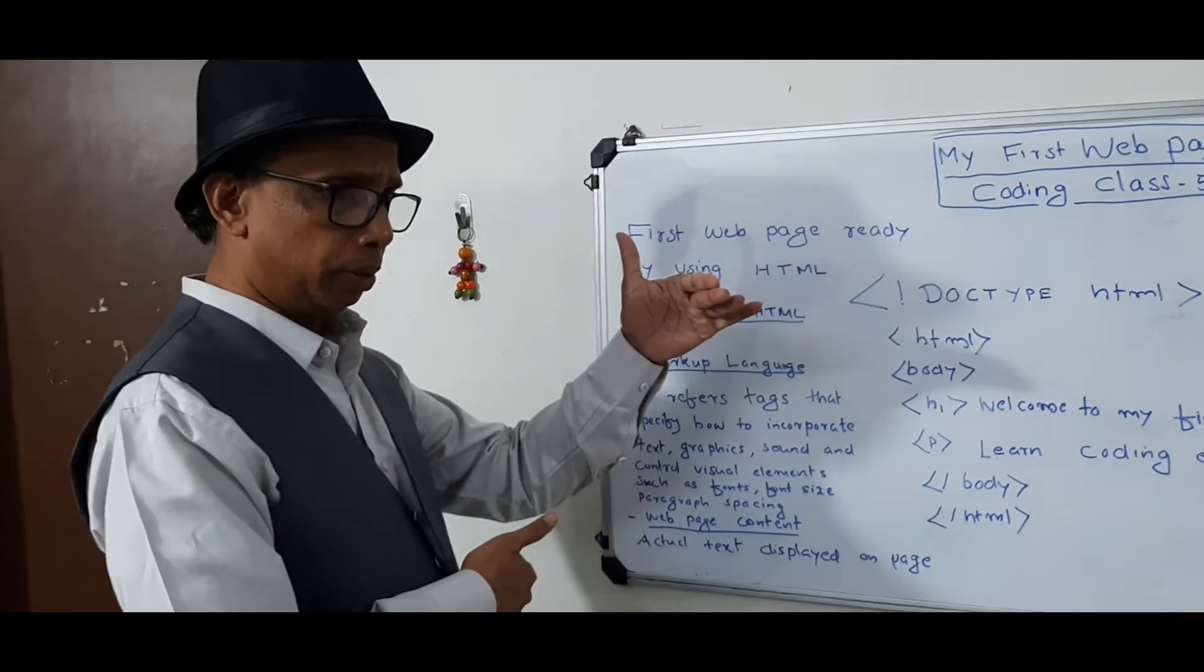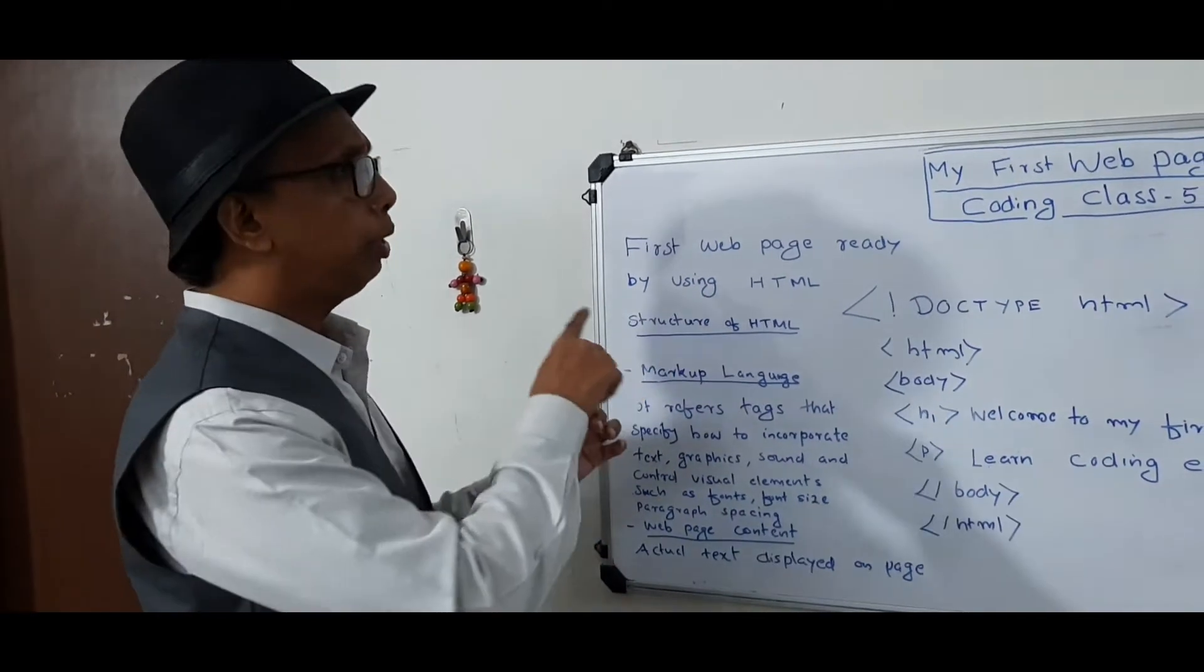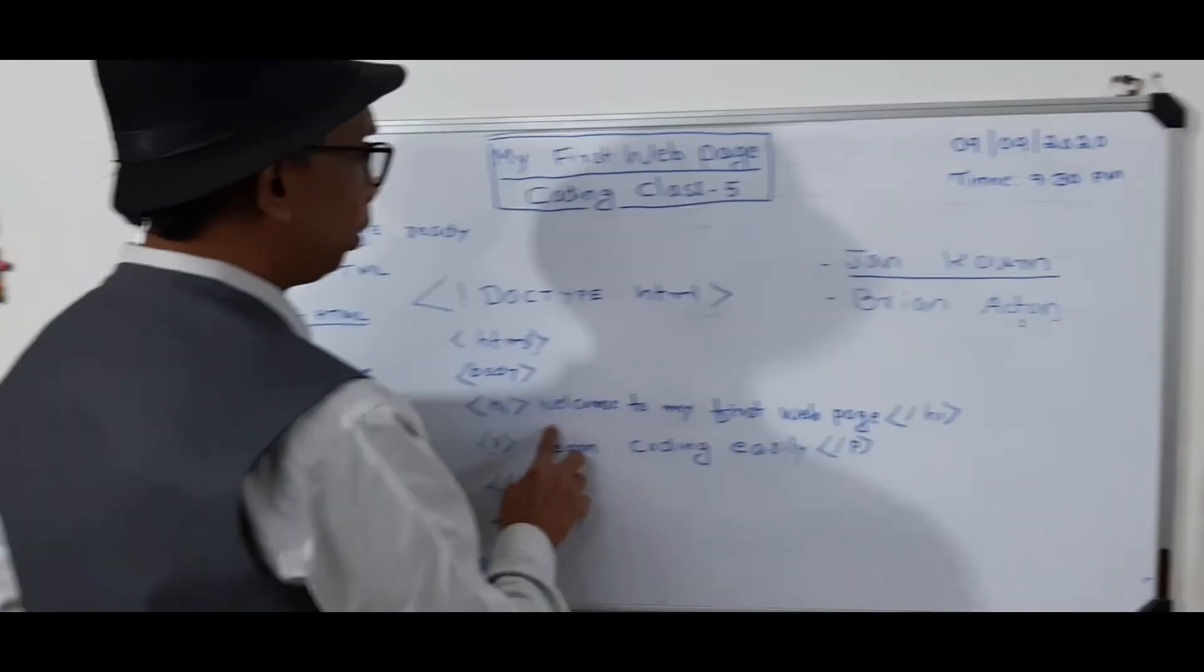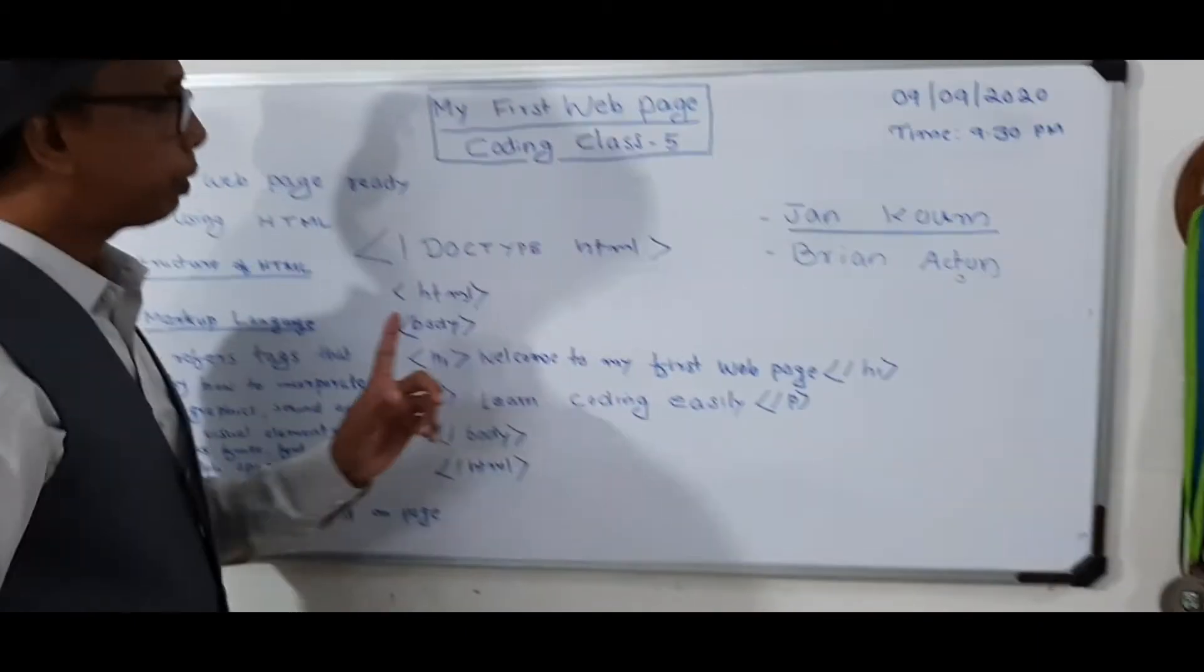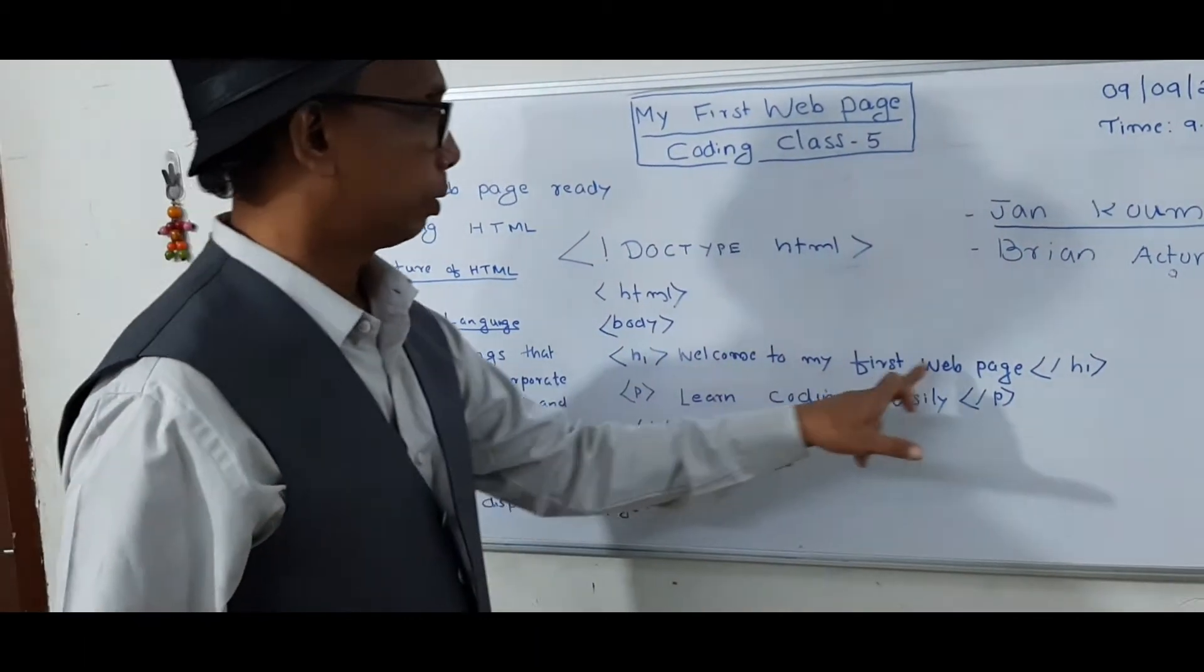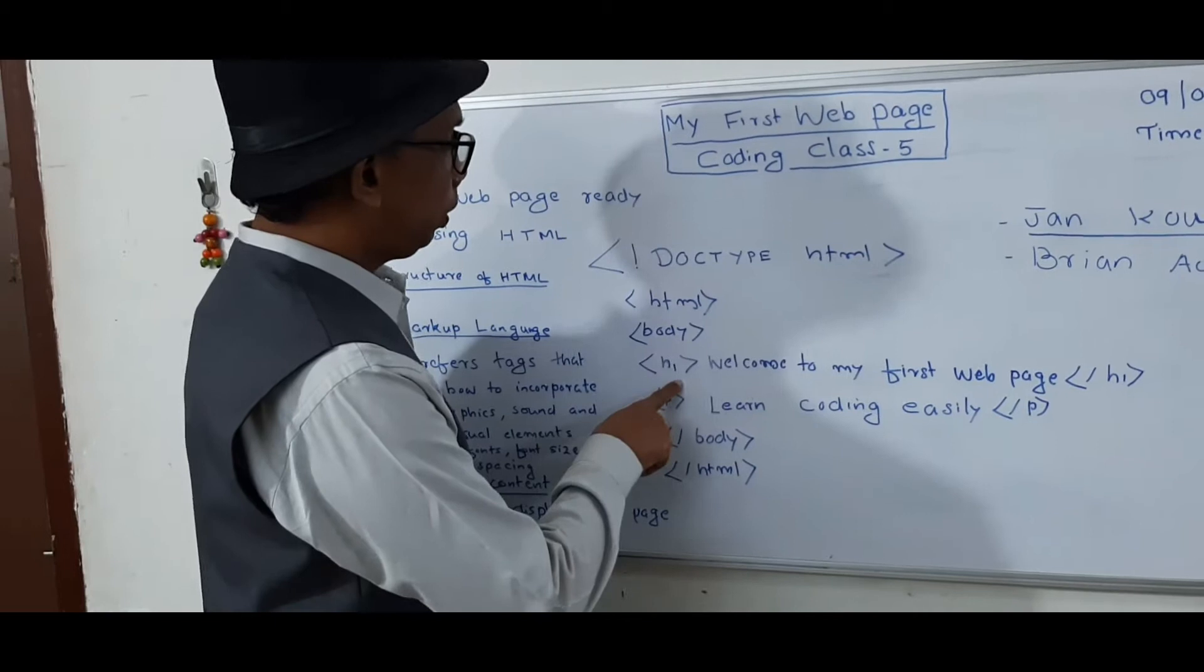When we open the web page, we can see the contents. Then you can see, welcome to my first web page. These are the contents. In the website, we can see only these sentences. We can't see these tags.